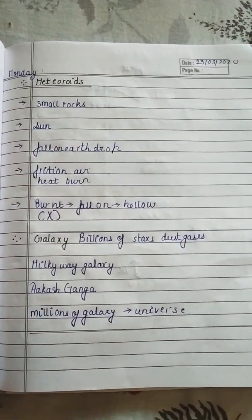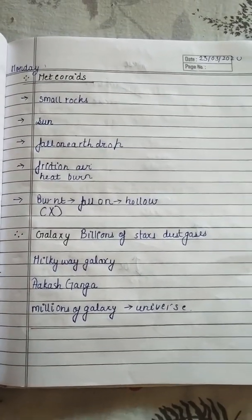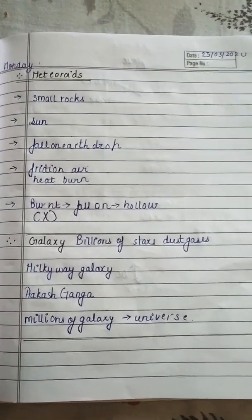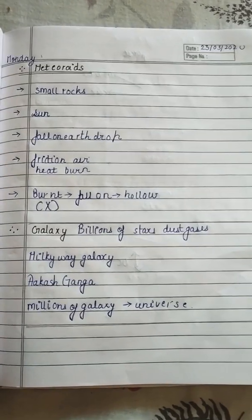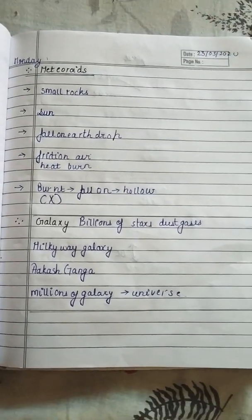Galaxy consists of billions of stars, dust, and gases. Milky Way Galaxy is called Akash Ganga. There are millions of galaxies in the universe. So we move to another topic, interior of the Earth.